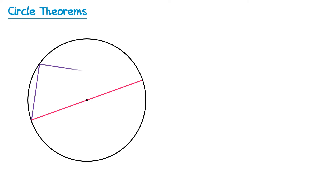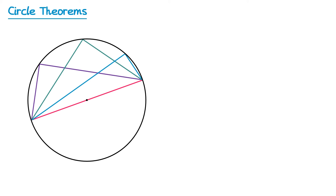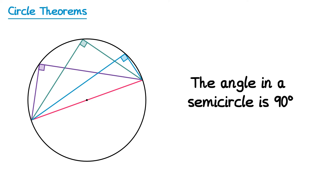So if we draw one angle, a second, and even a third, we know all three of these angles must be the same size. But it turns out that if the chord you draw happens to be the diameter of the circle going through the centre, all of these angles will always be right angles. So the second theorem is that the angle in a semicircle is 90 degrees. We say this is the angle in a semicircle because that diameter splits the circle in half.